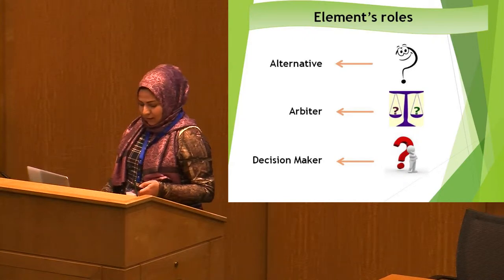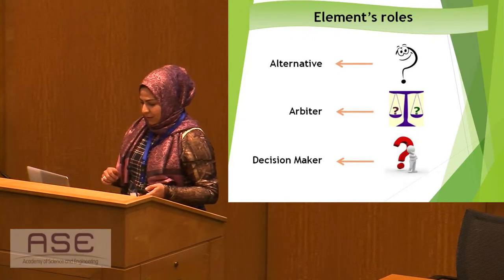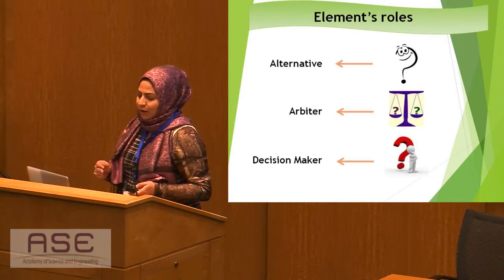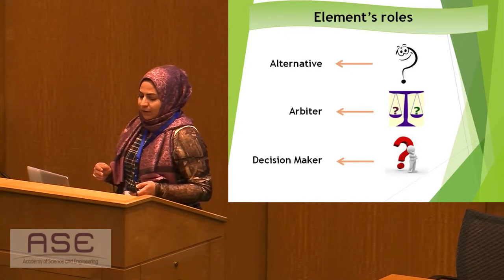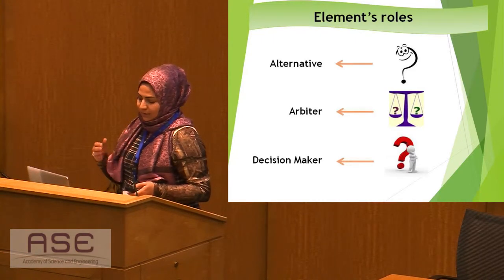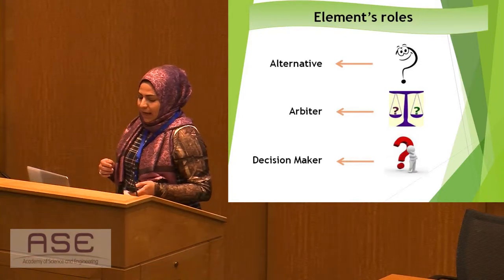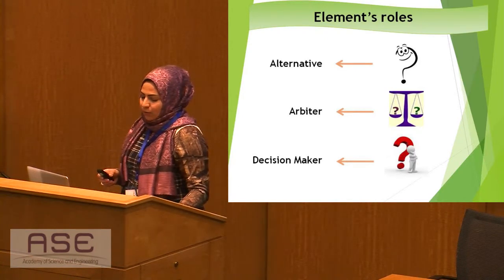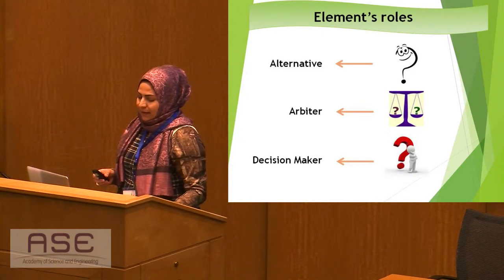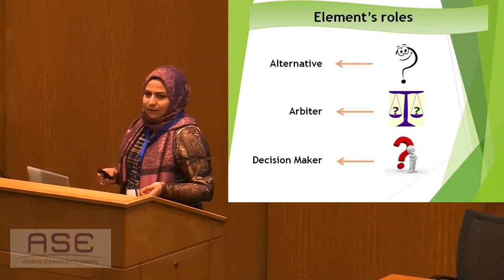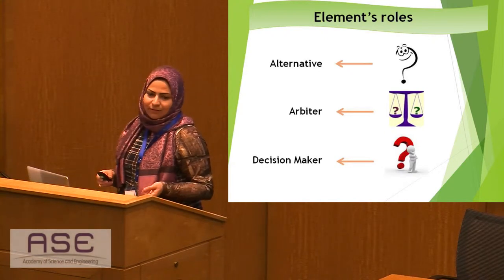Moreover, in this framework, we have a certain environment and quantitative variables. We define three roles for elements of the system. The element being judged has the role of an alternative. An arbiter has some criteria for measurement and can assess and order the opposite alternatives. The element which directly utilizes the assessment and judgment for the final solution has the role of a decision-maker. Therefore, the element with the decision-maker role definitely also has the role of arbiter, but the arbiter may not have the role of decision-maker.